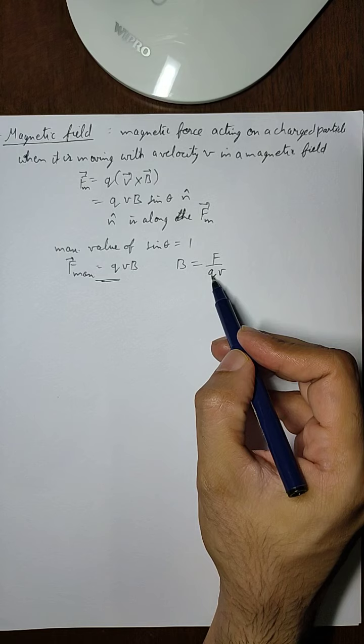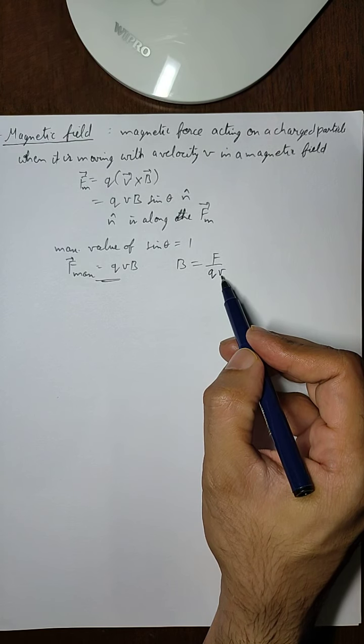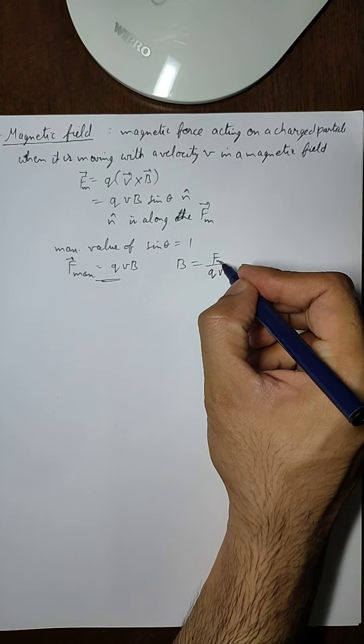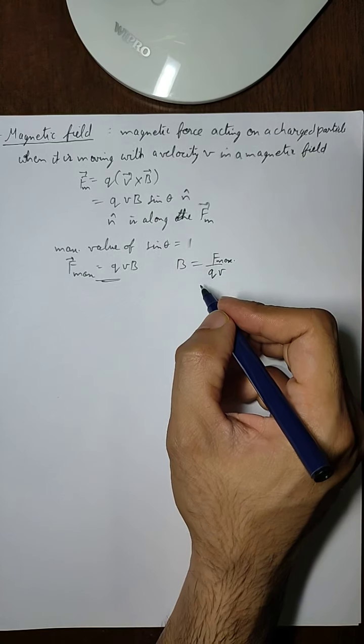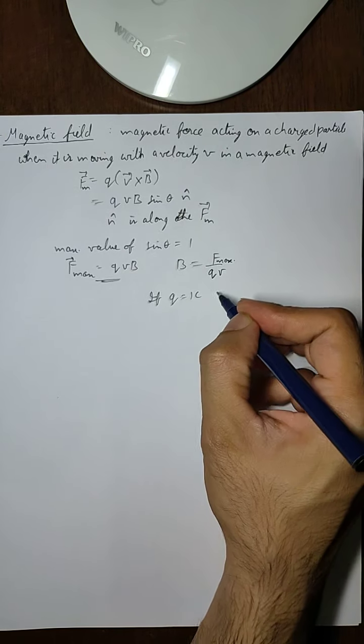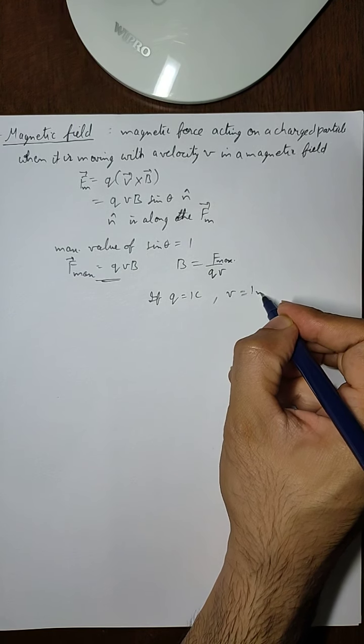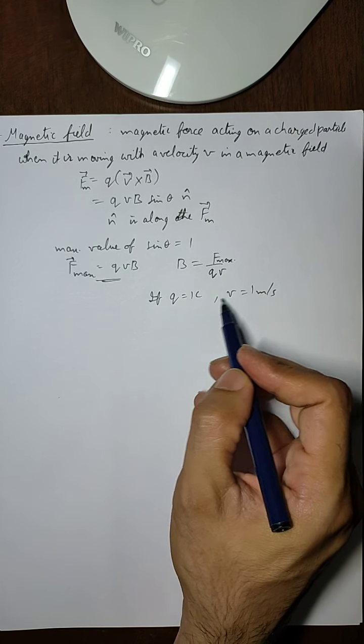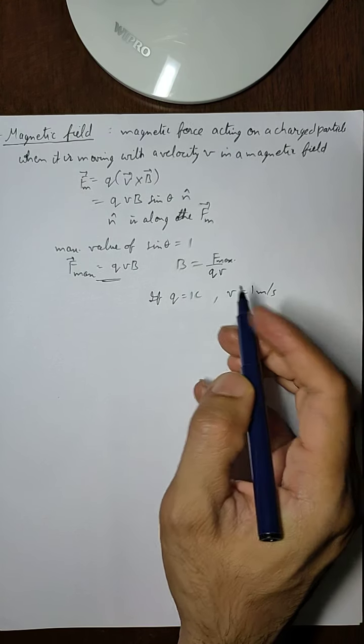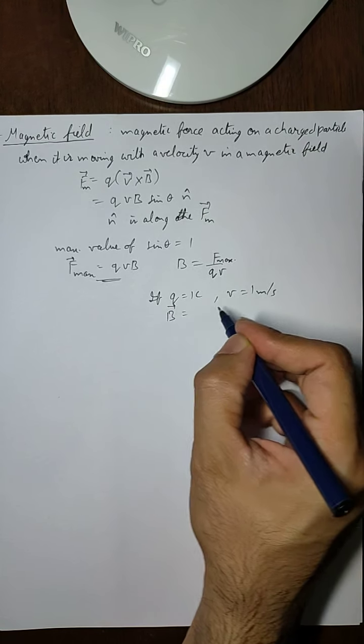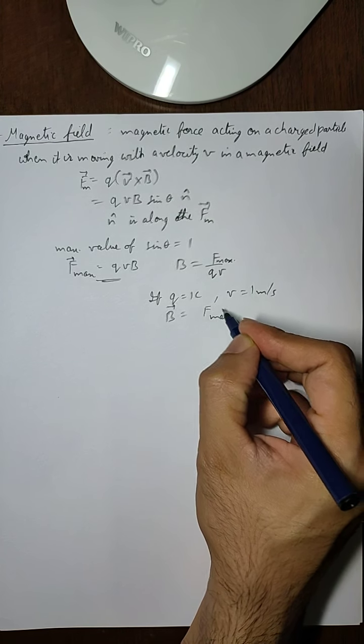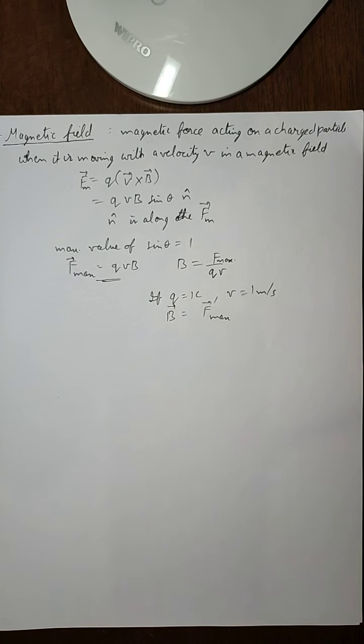Now, if Q is 1 coulomb and velocity is 1 meter per second, then the charge of 1 coulomb is moving at the velocity of 1 meter per second. In that case, the magnetic field strength will be equal to the maximum magnetic force that is applied by the magnetic field on the charged particle.